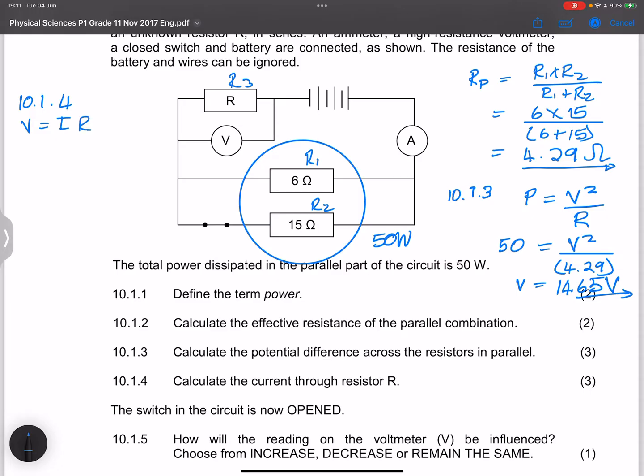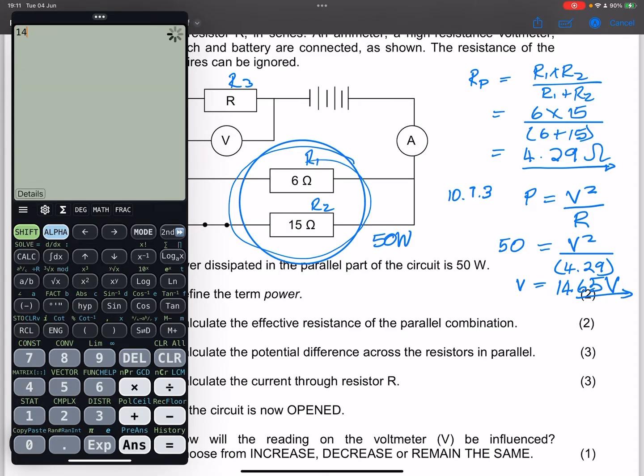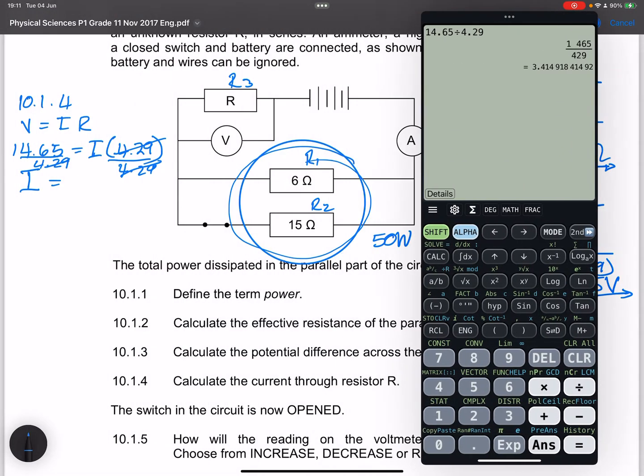So we can say for 10.1.4, that will be V is I times R. Our voltage is 14.65. It will be the total current passing through the combination of both of them. And we know that the resistance is 4.29. So what is that current then? So divide by 4.29 on either one. So 14.65 divided by 4.29 and that will give us 3.41 amps.